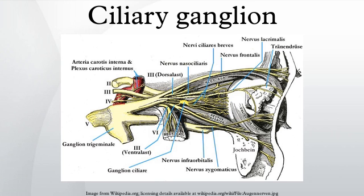Both of these muscles are involuntary. They are controlled by the autonomic nervous system. The ciliary ganglion is one of four parasympathetic ganglia of the head and neck.